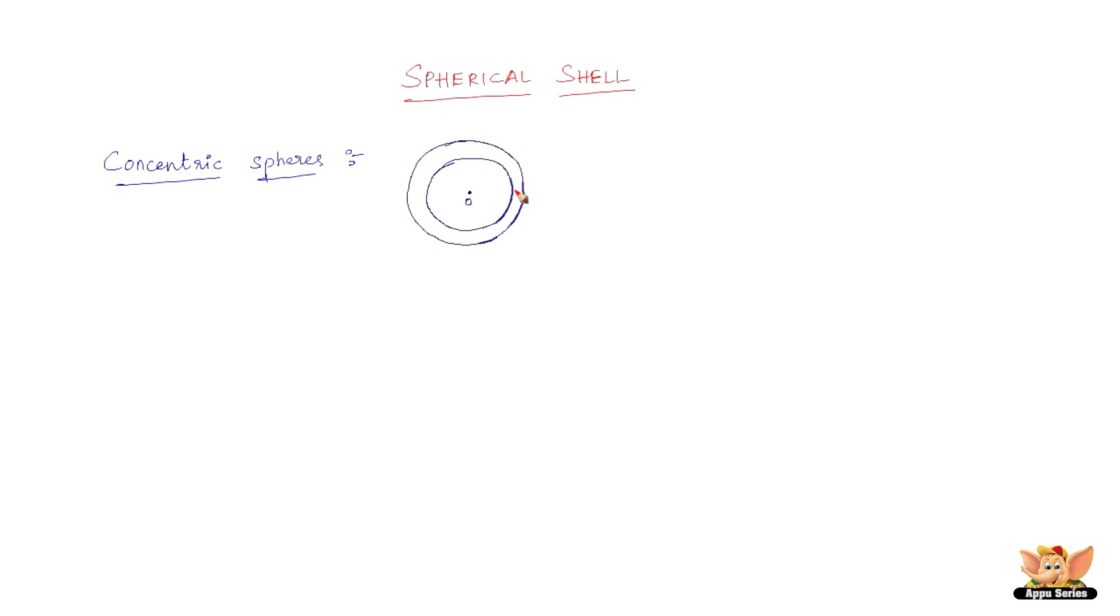Concentric spheres are nothing but two spheres having the same exact fixed point, that is the center, but then different radii are called as concentric spheres. So here if you see the smaller sphere,